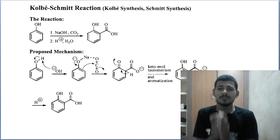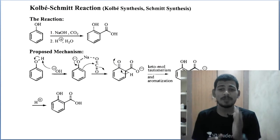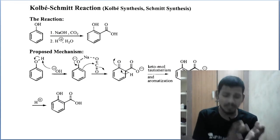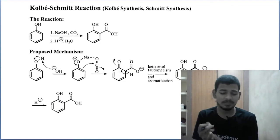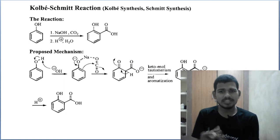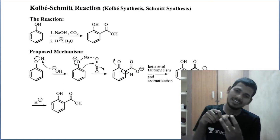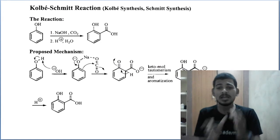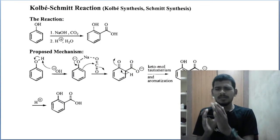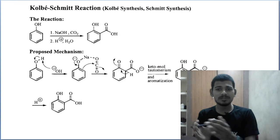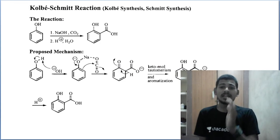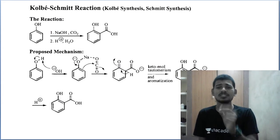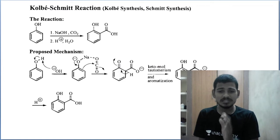In previous videos we discussed important name reactions. We completed reactions like the JSM reaction and other important named reactions. In this particular video we are going to learn about the Kolbe-Schmitt reaction, which is one of the important name reactions from phenols — very very important.